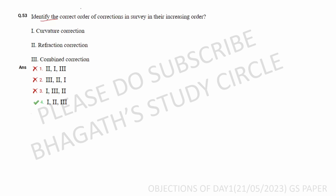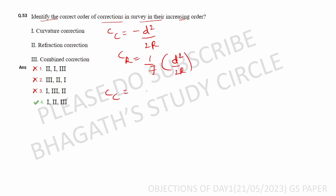First question: identify the correct order of directions in survey in increasing order. The curvature correction formula is minus d square by 2R. The refraction correction is 1/7th of d square by 2R. The combined correction is curvature correction plus refraction correction, which equals minus 6/7 times d square by 2R.